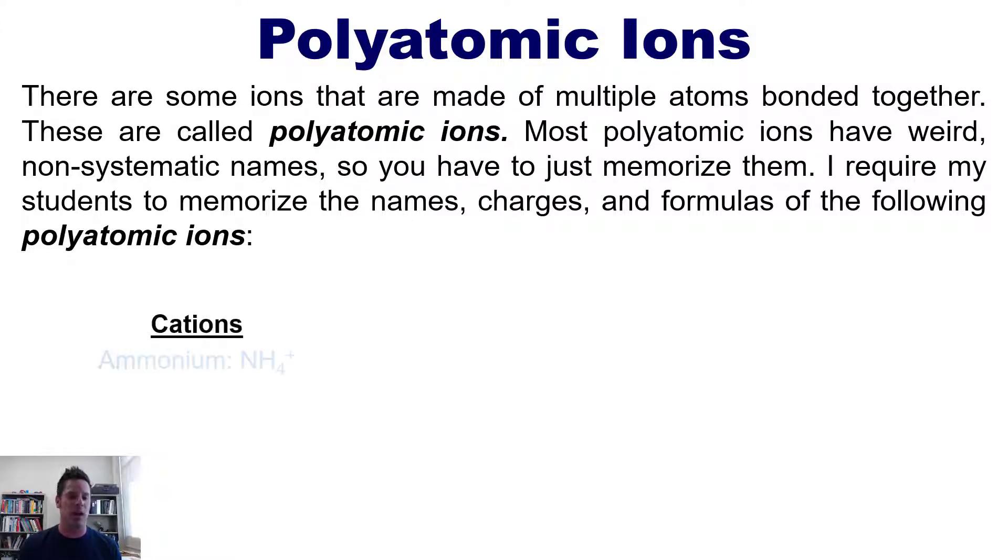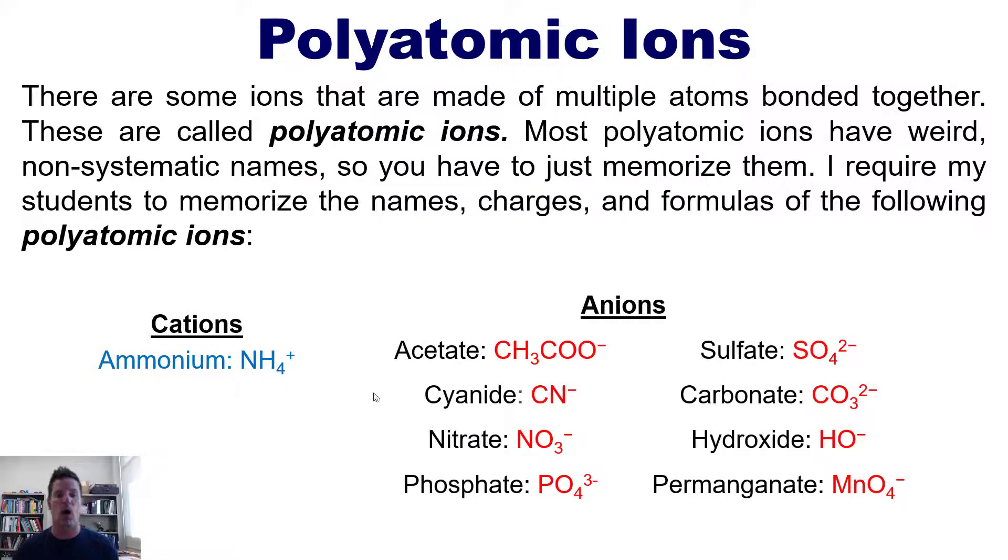In the cation category, there's only one. It's ammonium, which has this formula and a plus one charge. In the anion category, there are several. You can pause the video and take a look at each of these with their formulas, their charges, and their names. I require you to memorize them. So take a good pause, look at them, write them down, put them on flashcards if you need to, do whatever you need to do to get these in your brain.